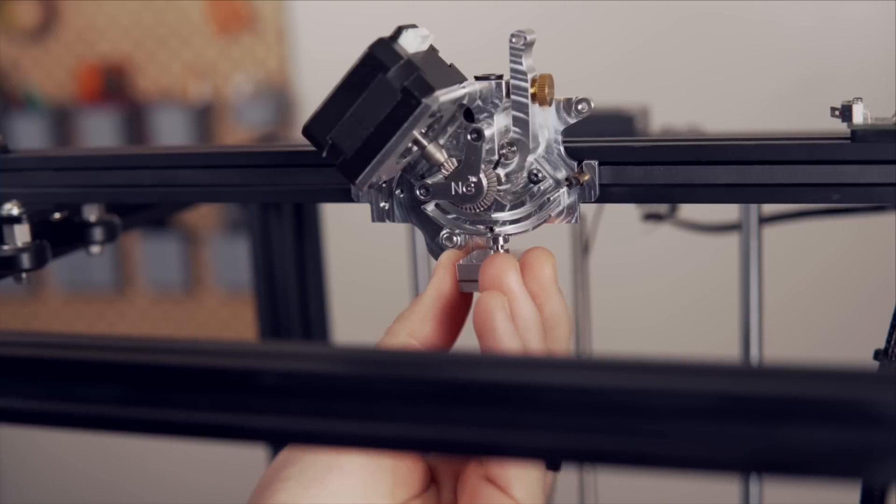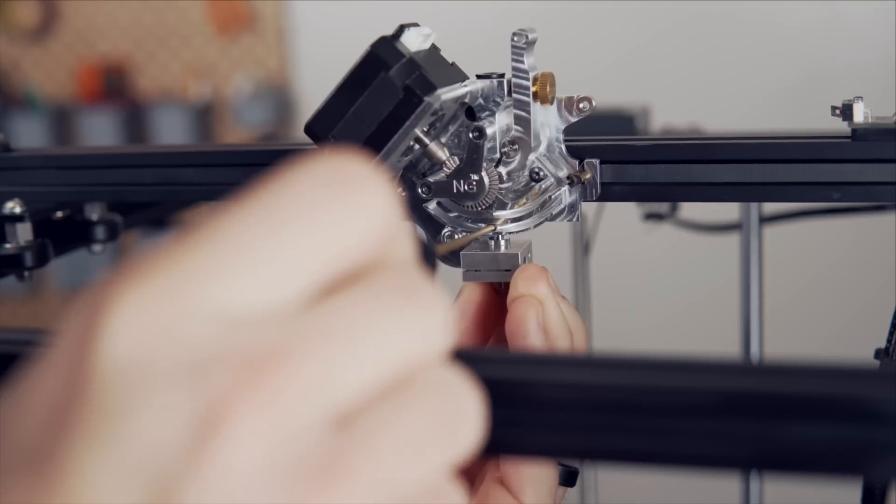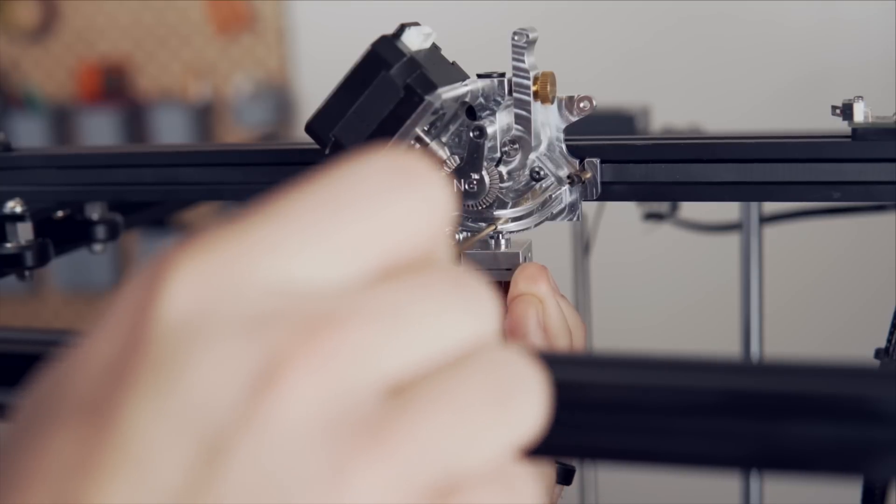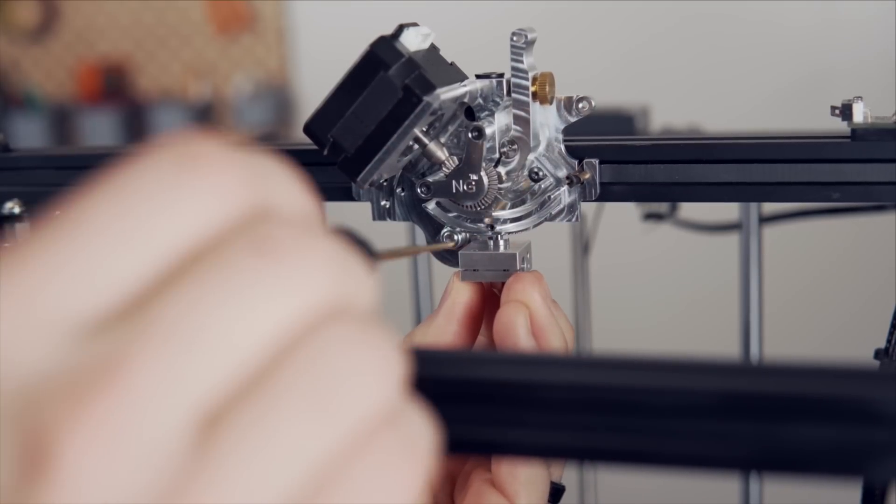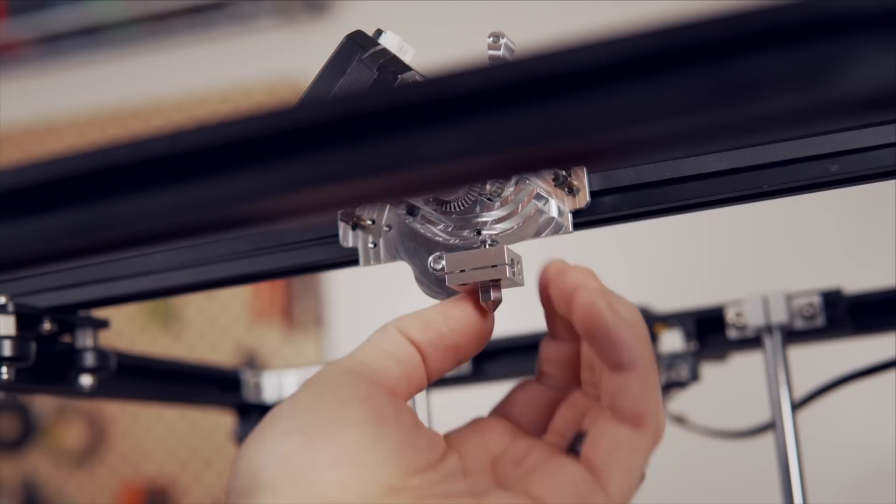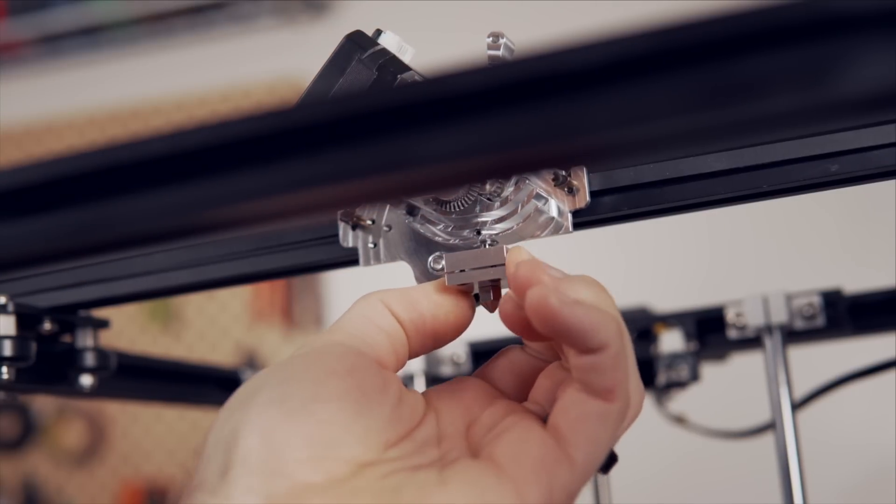To install the hotend, simply slide the heat brake into that slot on the bottom, and then with your other hand tighten the set screw. I usually tighten it a little bit and then back off and make sure it's straight before I completely seat it. You just want to hand tighten it. You don't need to torque down on that set screw.